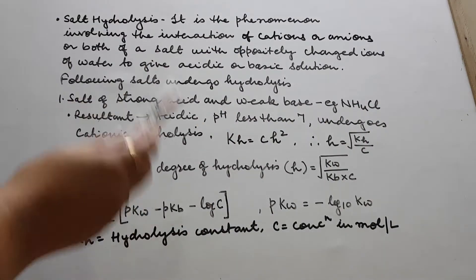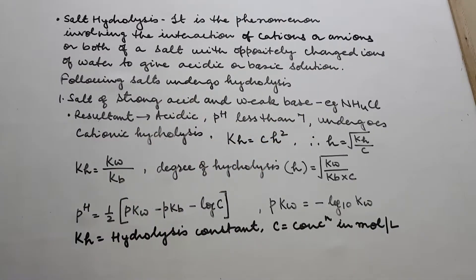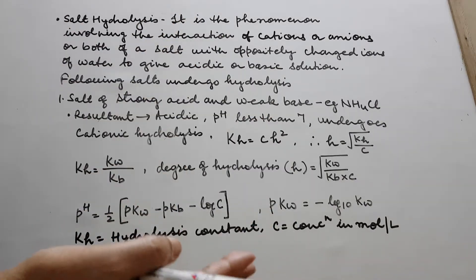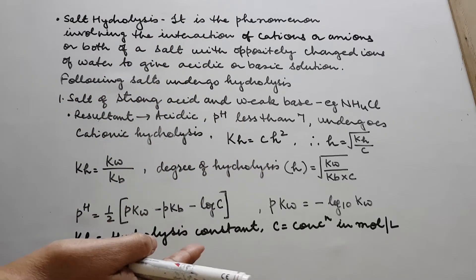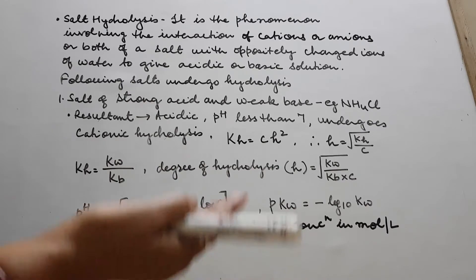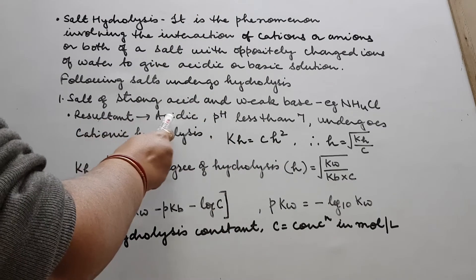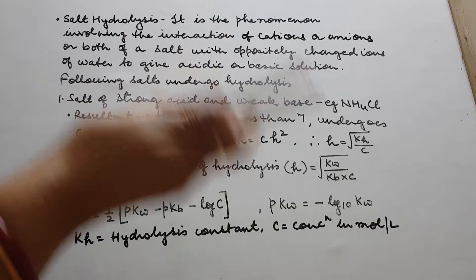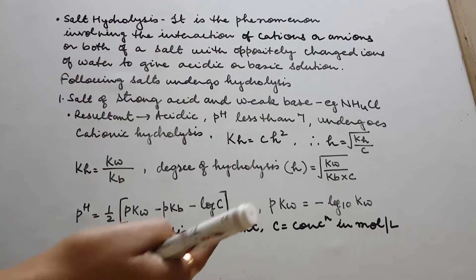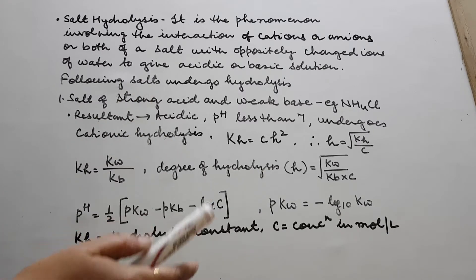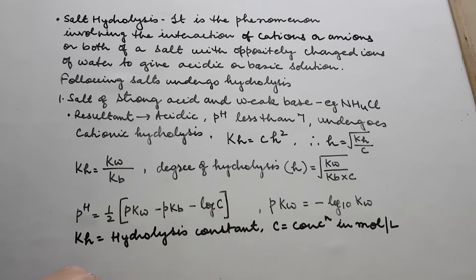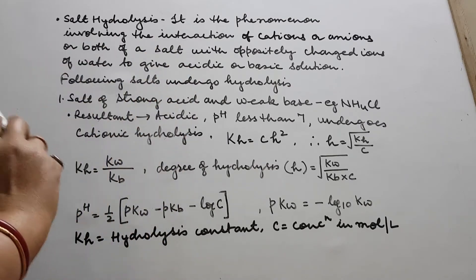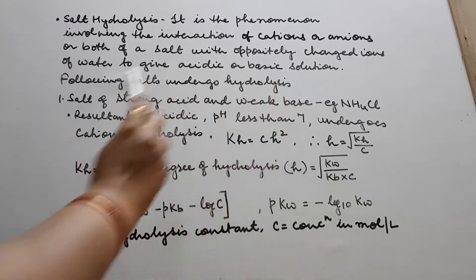If you dissolve NH4Cl in water, it will form NH4OH and HCl. Now, HCl is strong. So in the solution, we will see the dominating character of HCl — the resultant solution will be acidic in nature. The acidic nature will be dominating because HCl is a strong acid. In the solution, the acidic nature of HCl will dominate over the basic nature of NH4OH, and the resultant solution will be acidic with pH less than 7.